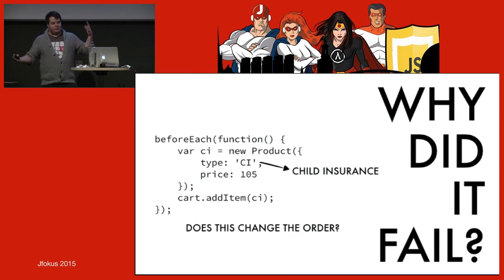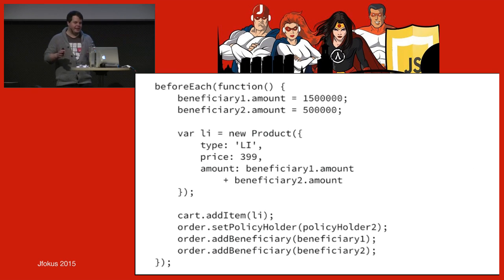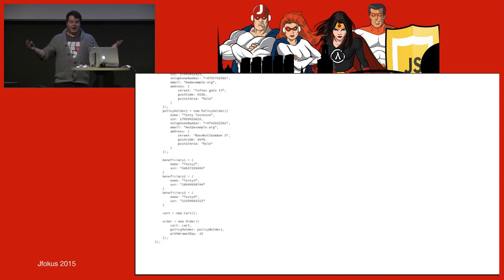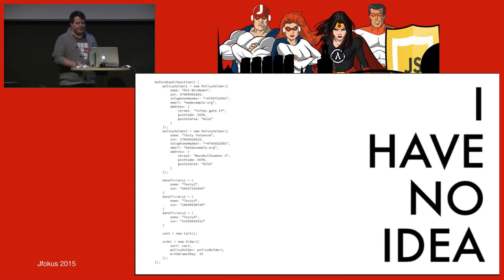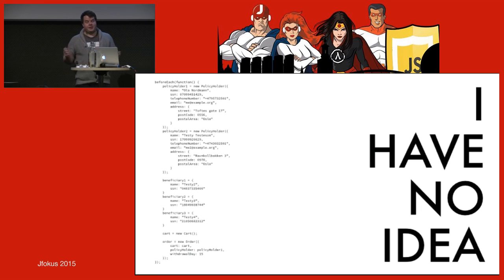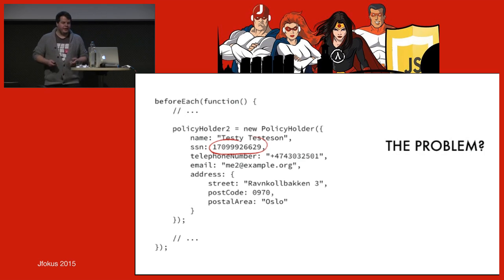That beforeEach covered about five tests. Going one group up, the next beforeEach covered about 20 tests, and the whole file had about 60 tests — creating products, adding things to a cart, updating the order. After debugging for half an hour, I found the problem: an 11-digit social security number. In Norway you can calculate someone's age from their social security number, and this test user had gotten too old to have child insurance.